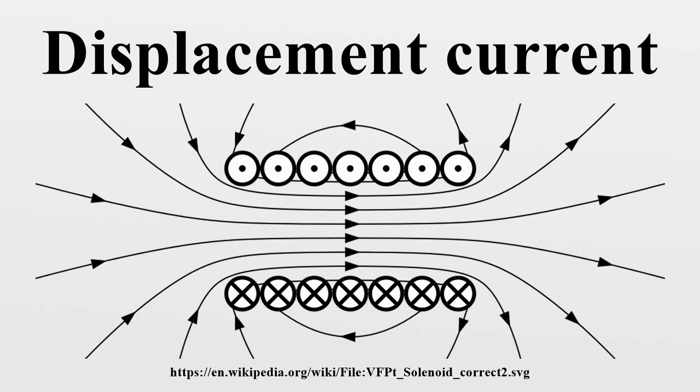Maxwell added displacement current to the electric current term in Ampere's circuital law. In his 1865 paper A Dynamical Theory of the Electromagnetic Field, Maxwell used this amended version of Ampere's circuital law to derive the electromagnetic wave equation.